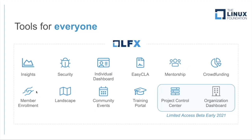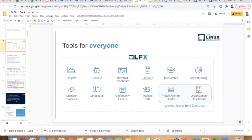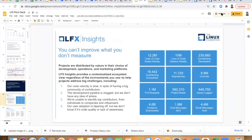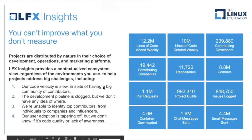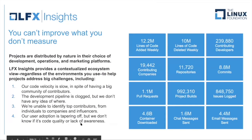For Insights in particular, from a business problem standpoint, we interviewed a lot of projects and got requirements. Some said code velocity is slow — we have a big community of contributors but there are clogs in the development pipeline and we can't identify them. Others said they're unable to identify top contributors or influencers from individuals to companies. Or user adoption is tapering off or the project is plateauing — is it code quality or lack of awareness? Those are the different problem areas we're trying to solve.